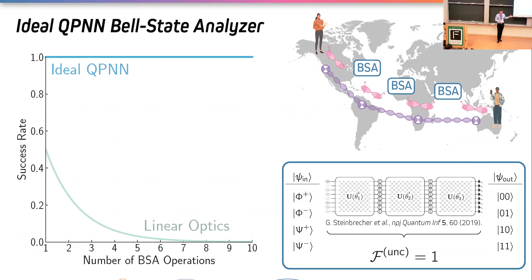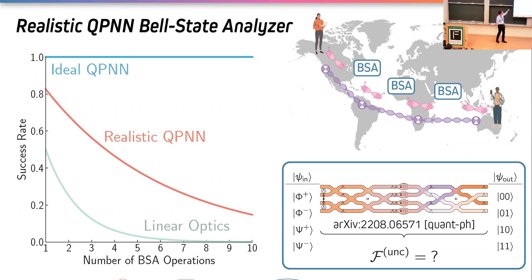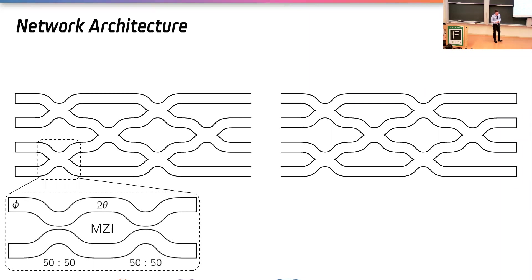While this is great, it doesn't really tell us what we want to know, because it assumes the network will be perfect and we know nothing in life ever is. What we really want to do is look at the realistic version of the network and fill in the gap between ideal and linear optics, to see if we can reach some non-negligible success rates for technologies like this.